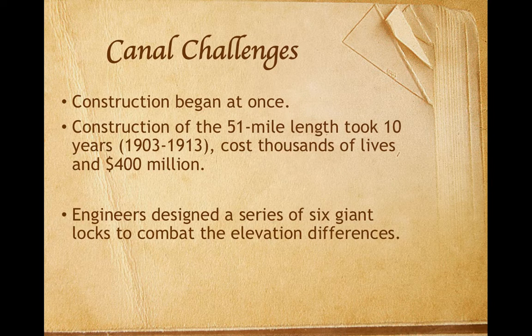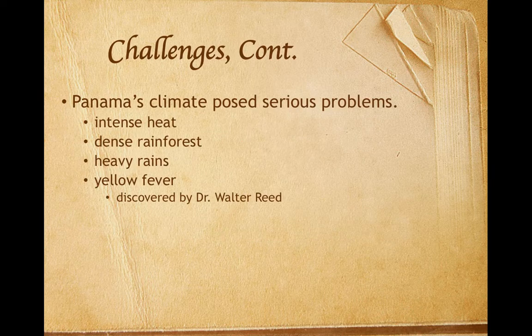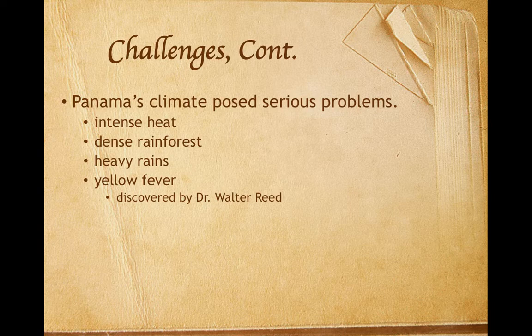There were many challenges. President Roosevelt ordered the building of the canal almost at once. Construction of the canal presented lots of problems and political obstacles. Construction of its 51-mile length took 10 years and cost thousands of lives and $400 million. Because the canal crossed landforms at different elevations, engineers had to design a series of six giant locks. Panama's tropical climate posed a special challenge. Workers labored in intense heat as they cut through mountains and dense rainforests, and heavy rain caused frequent mudslides. Dr. Walter Reed had just discovered that yellow fever was spread by mosquitoes. To reduce the threat of yellow fever, Dr. William Gorgas of the U.S. Army ordered all swamps drained, vegetation cut down, and all standing water sprayed with oil to prevent further breeding of mosquito larvae.